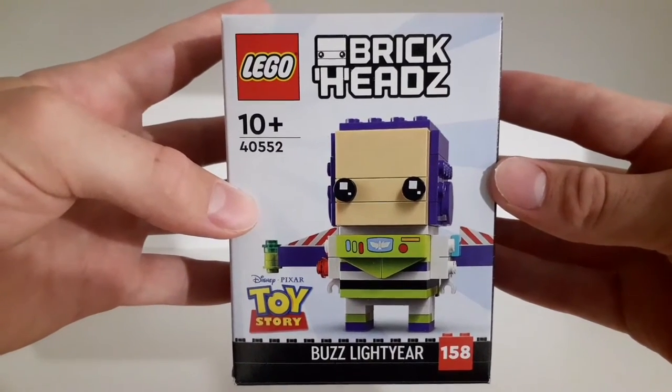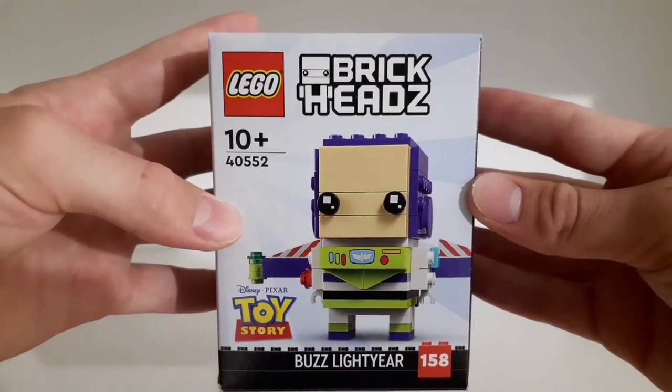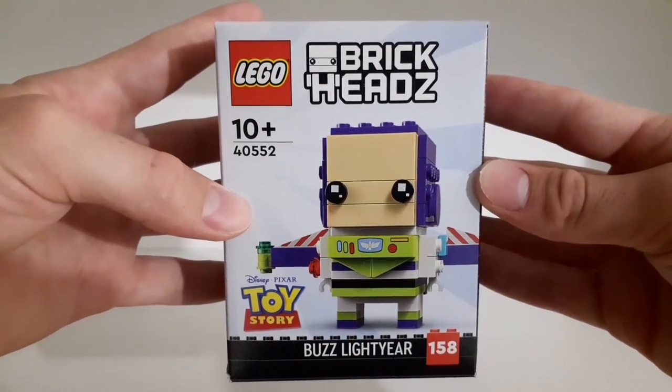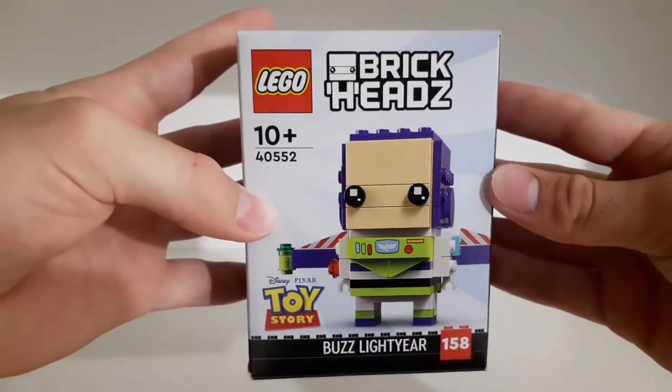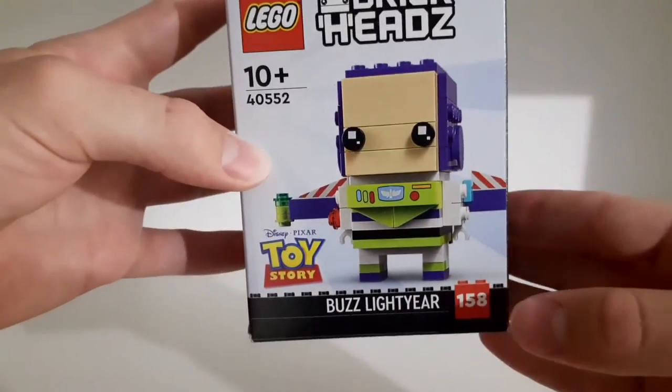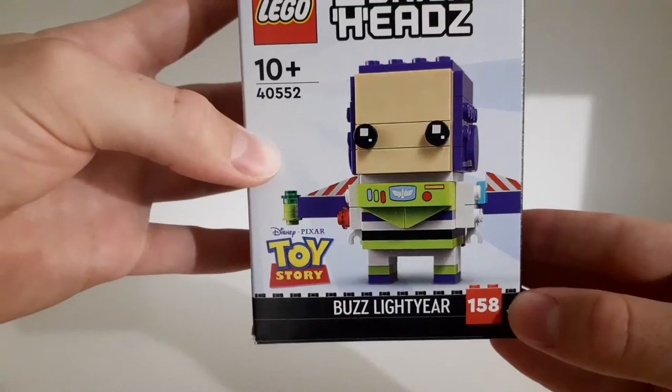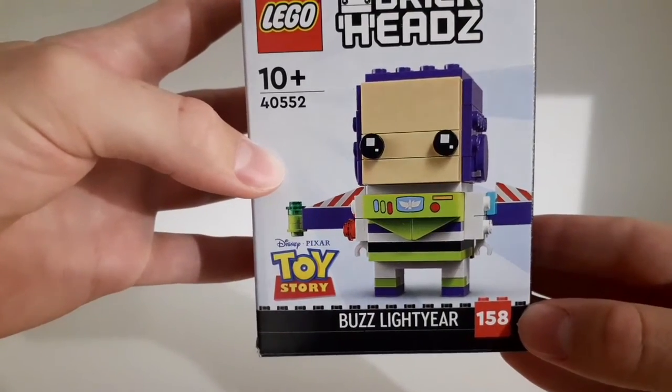The set name is Buzz Lightyear, the set number is 40552, it's a 10 plus set, it contains 114 pieces and it was released in 2022. Actually this is the 158 BrickHeadz figure.